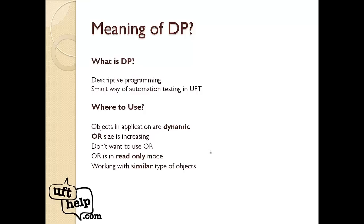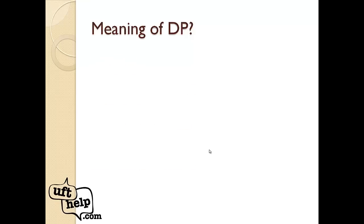The most important scenario is when we are working with similar types of objects. For example, if an application form has 20 text boxes or two to three buttons appearing on each page, rather than adding those objects one by one to the object repository, we use DP. These are some of the practical scenarios where DP is implemented.